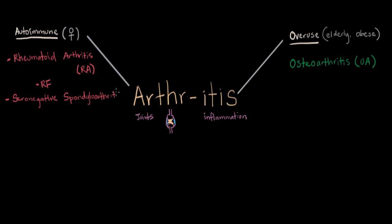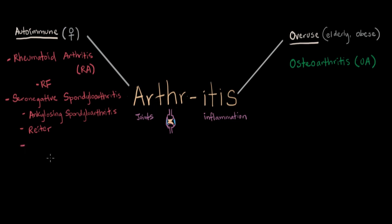The name tells you a lot — it tells you it's not going to be RF positive, and it's going to involve the spine. Under this category we have ankylosing spondyloarthritis — 'ankylosing' meaning fusion or fusing together, which is a common symptom. I'll probably refer to this as AS. We also have Reiter's syndrome, named after the person who discovered the disease, and psoriatic arthritis, which is part of psoriasis — one of the autoimmune systemic diseases that also causes inflammation of the joints.